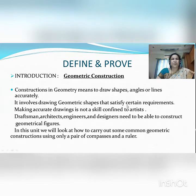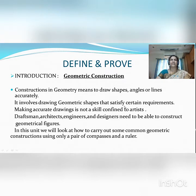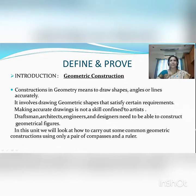Constructions in geometry means to draw shapes, angles or lines accurately. It involves drawing geometric shapes that satisfy certain requirements. Making accurate drawings is not a skill confined to artists. Draftsmen, architects, engineers and designers need to be able to construct geometrical figures. In this unit, we will look at how to carry out some geometric constructions using only a pair of compasses and ruler.